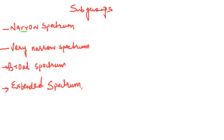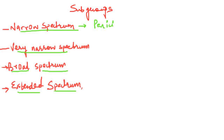The first subgroup is called the narrow spectrum penicillin, also called generation 1 penicillin. In the narrow spectrum penicillin, we have two types: penicillin G and penicillin V. These are also called natural penicillins as they are naturally obtained from the fungus. So these are the generation 1 or narrow spectrum penicillins.